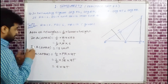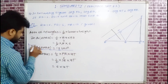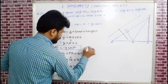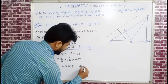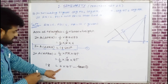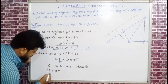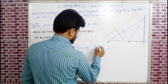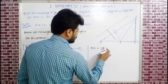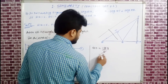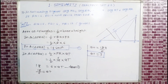We have 18 = 6 × QT. Therefore QT = 18 ÷ 6 = 3. So QT = 3.